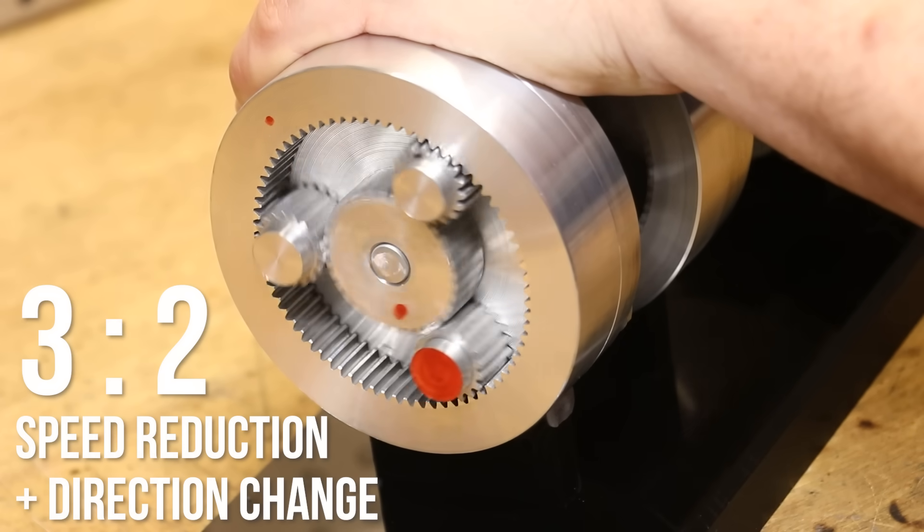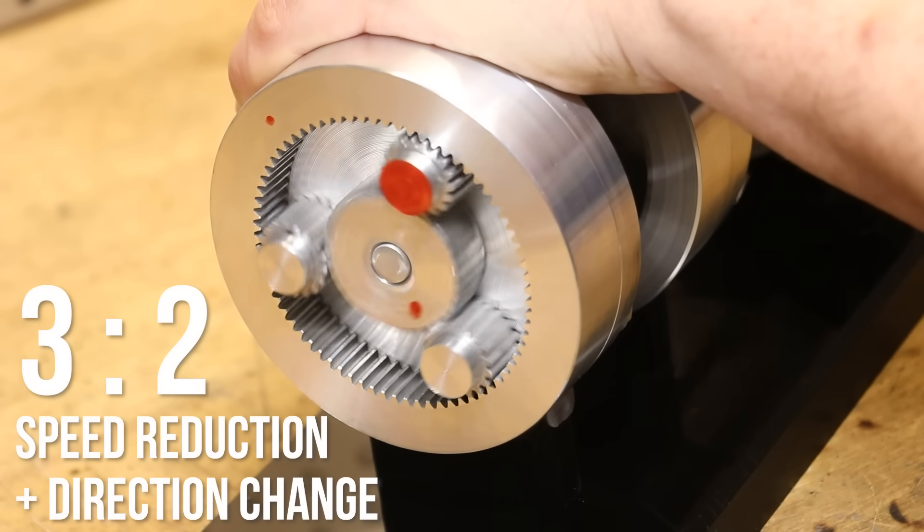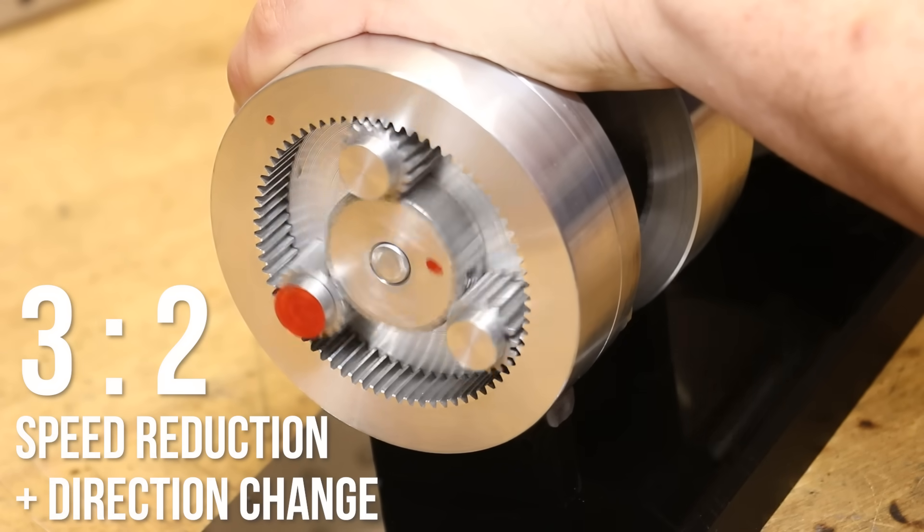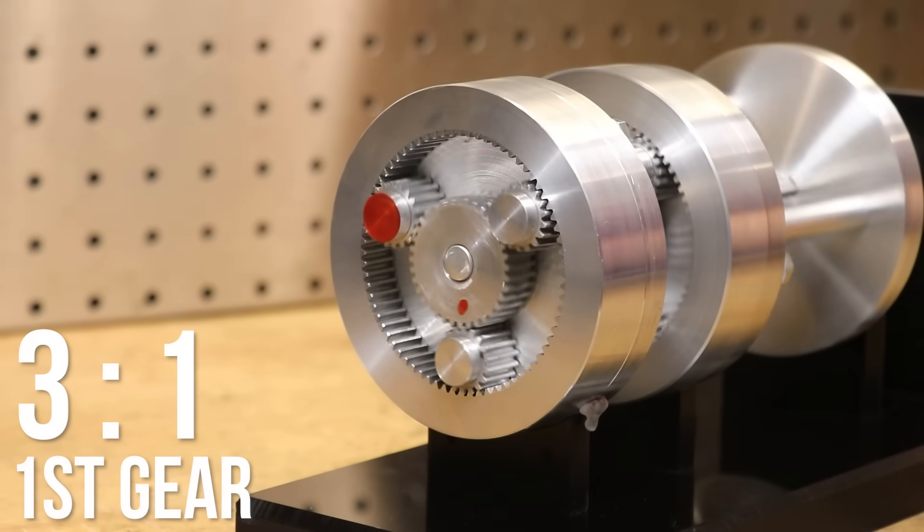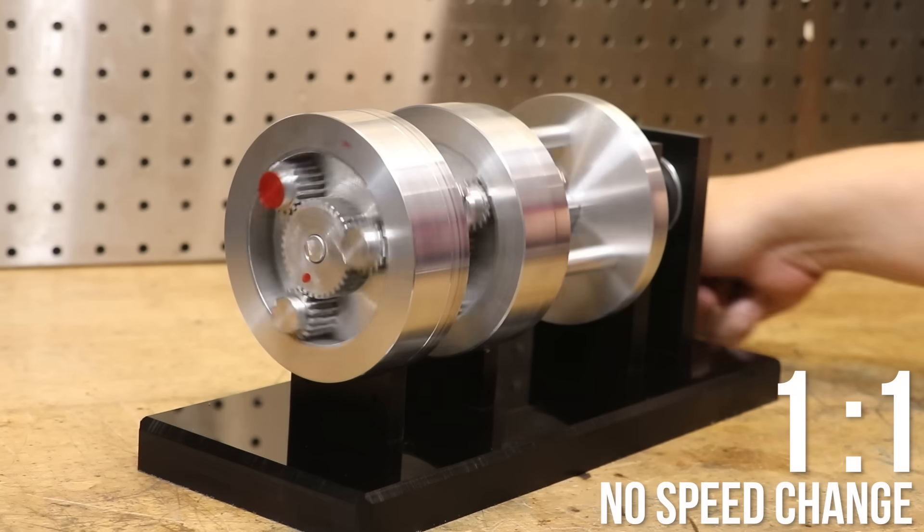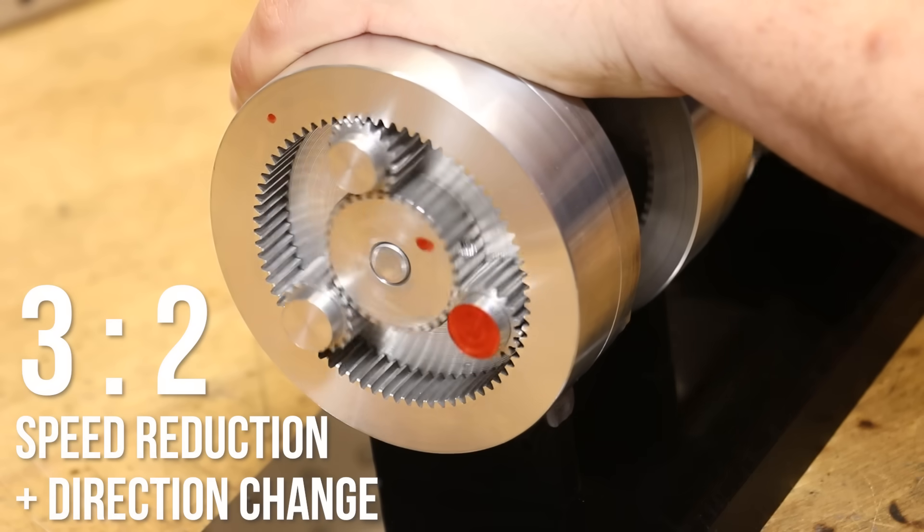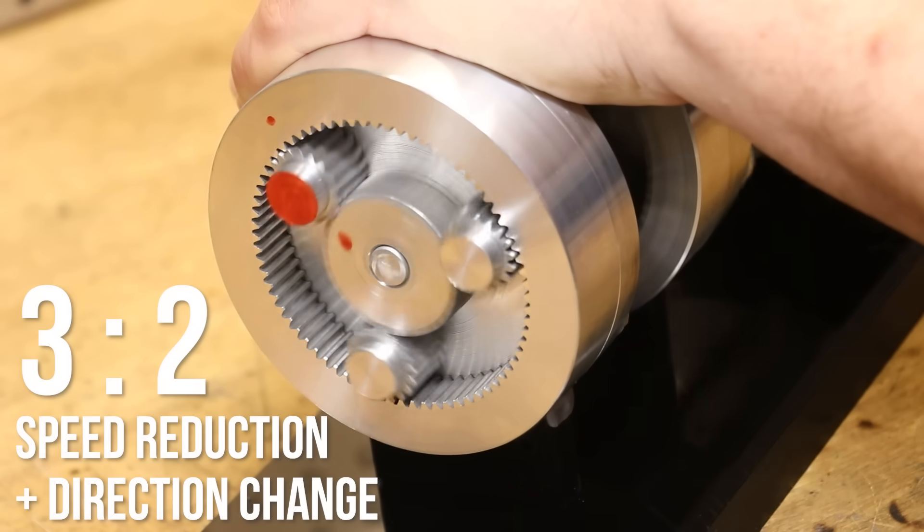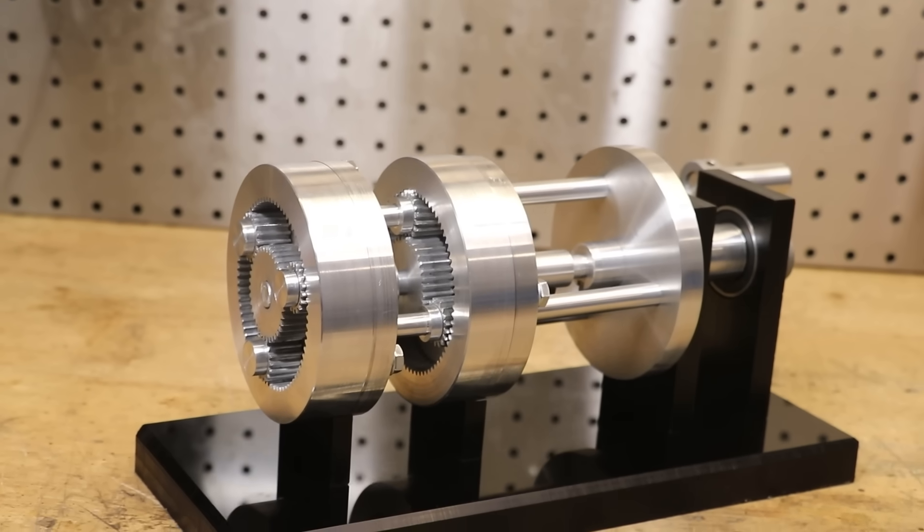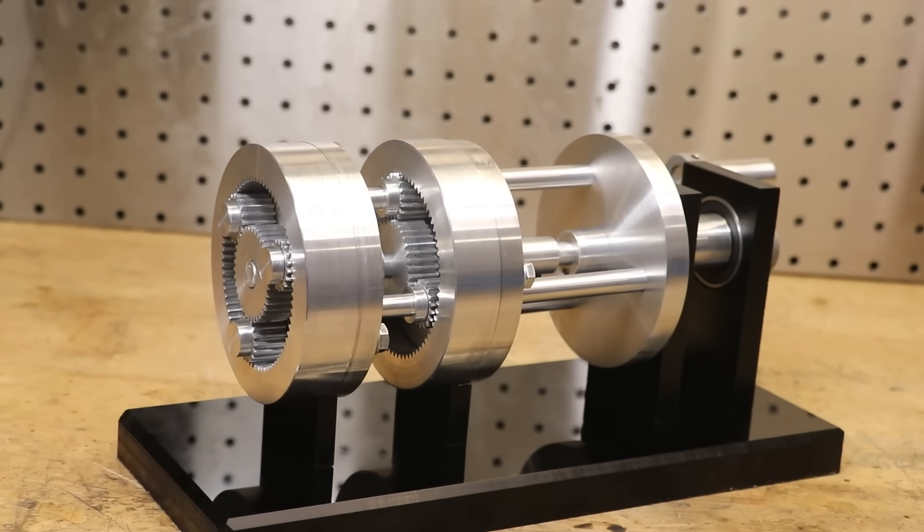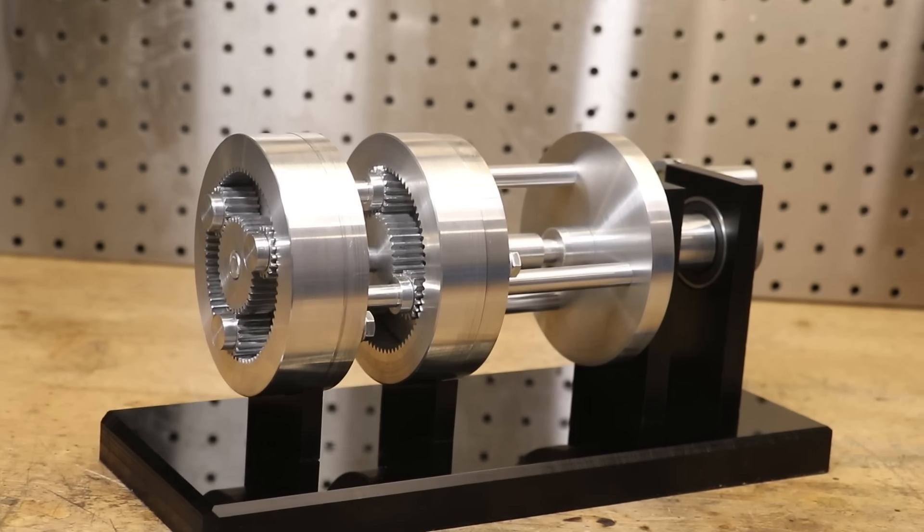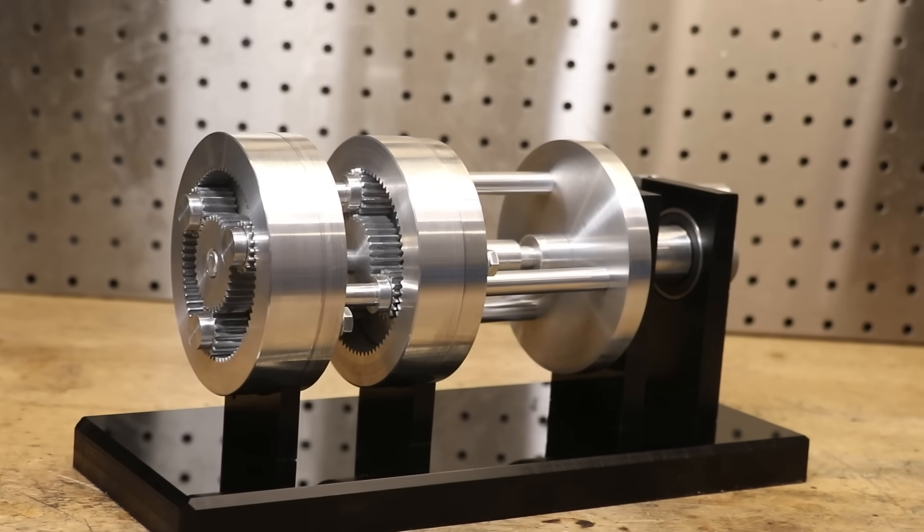As you can see, using only two planetary gearboxes and four clutch combinations we've been able to achieve our first, second and third forward gears plus our one reverse gear. And this would have been the basic setup found in many three-speed automatic transmissions for the main reason that they were cheap, simple and adequate for the task.